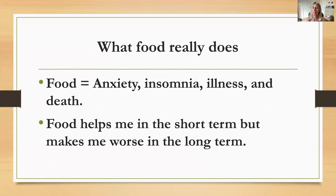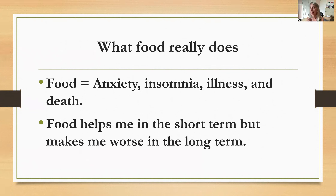Now think about what food really does. For me, food equals anxiety, insomnia, illness, and death — basically, if you get diabetes from overeating sugar, which I was very likely to do at one point in my life, then eventually you go blind and you lose your legs and you die. So I'm just going to tap on that. Food actually leads to anxiety, insomnia, illness, and death. That was true for me — if I ate sugar, I felt more anxious the next day, I couldn't sleep that night, I would get a cold within a few days. Not everybody has that reaction to sugar, but this was true for me.